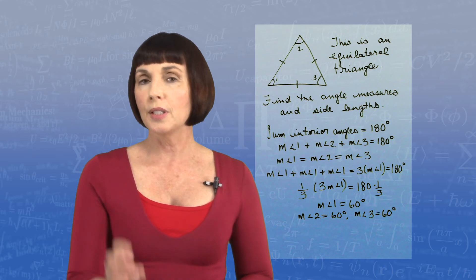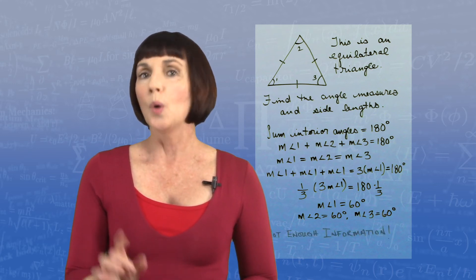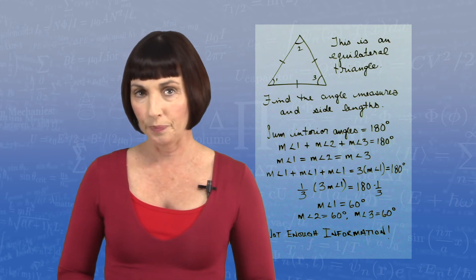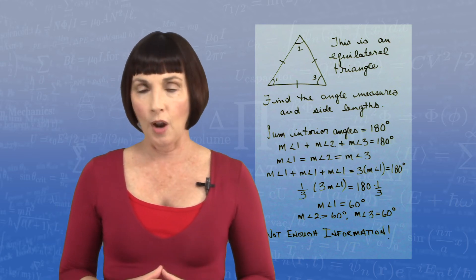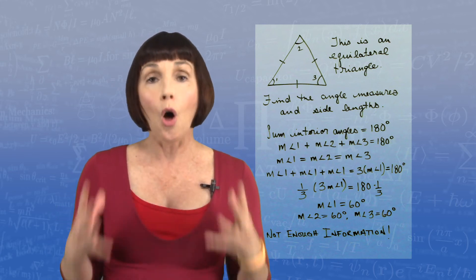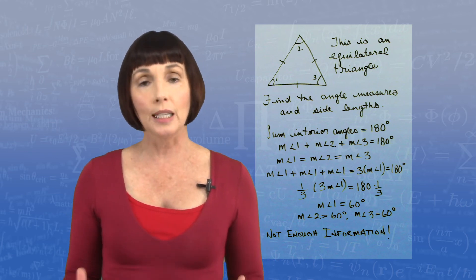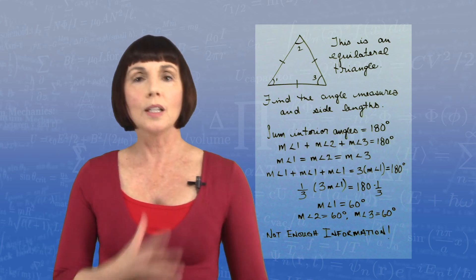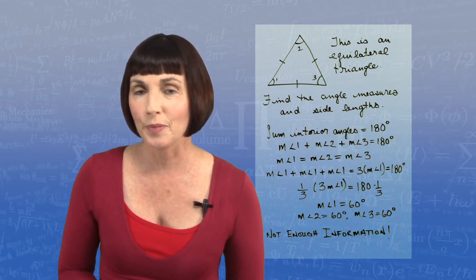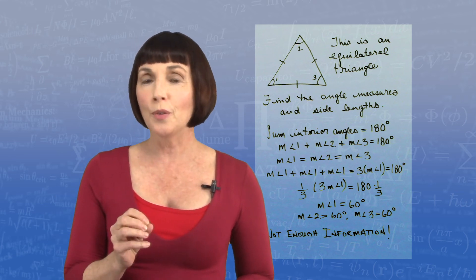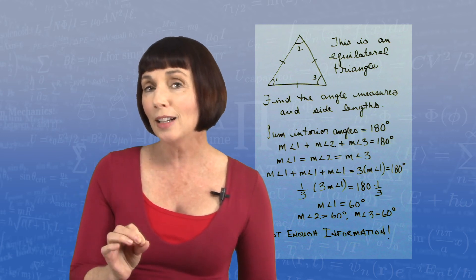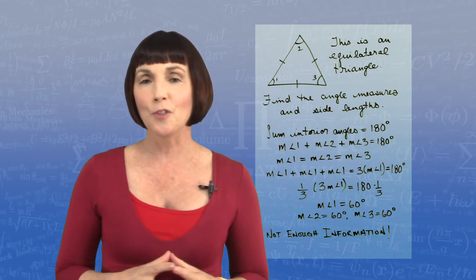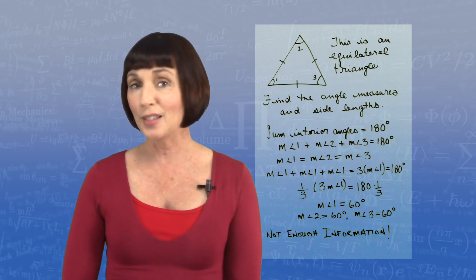Now, what about the lengths of the sides? We actually don't have enough information to answer that question. In any equilateral triangle, the three angles always each measure 60 degrees. But the side lengths — we don't know that unless we're told something else about the triangle. So while you can always figure out the interior angles of an equilateral triangle, you have to be given more information to know the lengths of the sides.